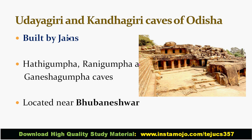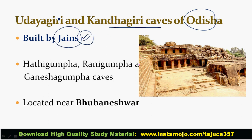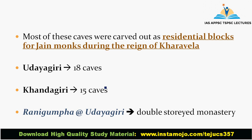Next important caves are Udayagiri and Khandagiri Caves of Odisha. These are Jain caves — an important keyword. Notable caves here include Hathi Gumpha, Rani Gumpha, and Ganesha Gumpha. The Jain monks used these as residential blocks. Udayagiri has a total of 18 caves and Khandagiri has 15 caves. Rani Gumpha cave at Udayagiri is particularly important.